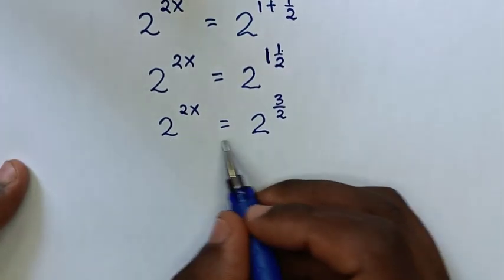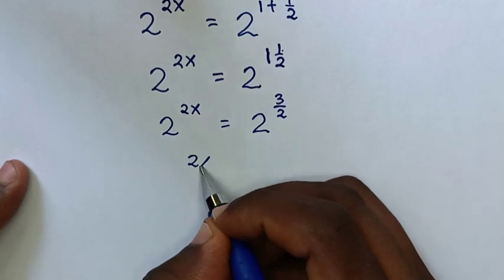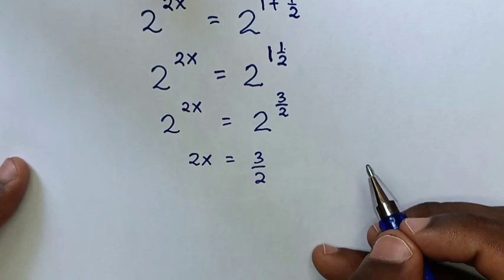Then in the next step, because we have the same base, we'll compare the powers, so it will be 2x equals 3 over 2.